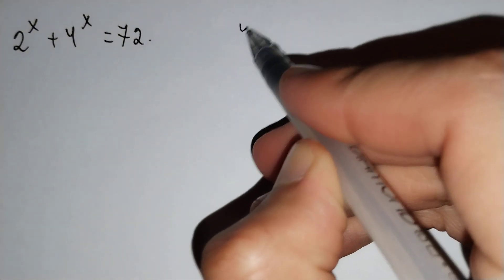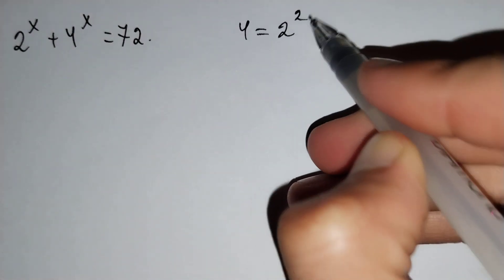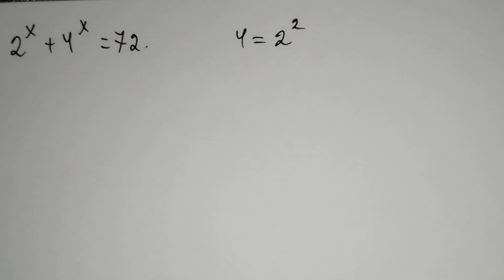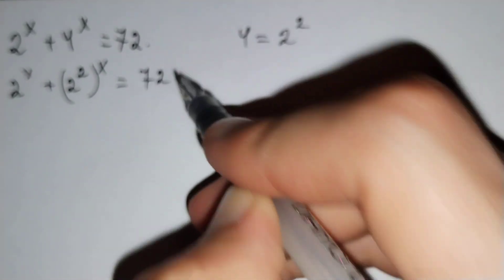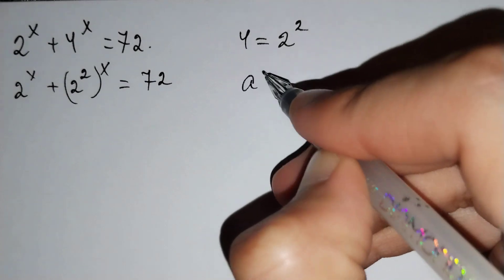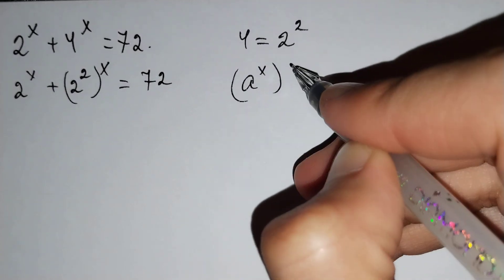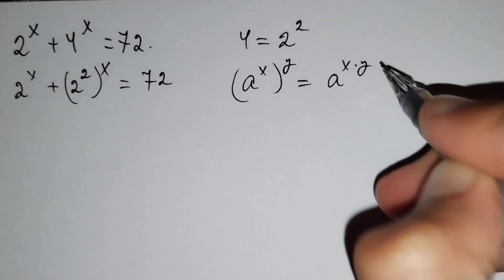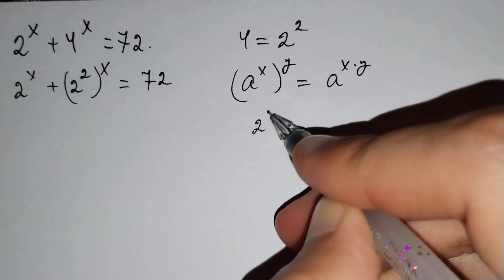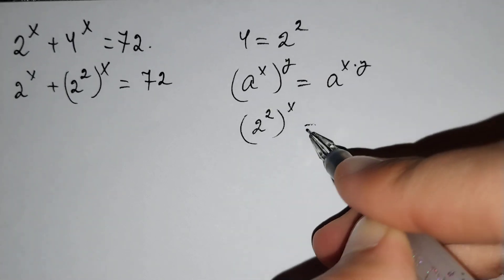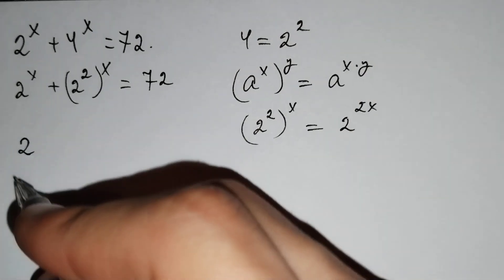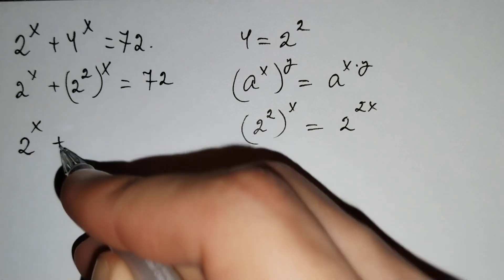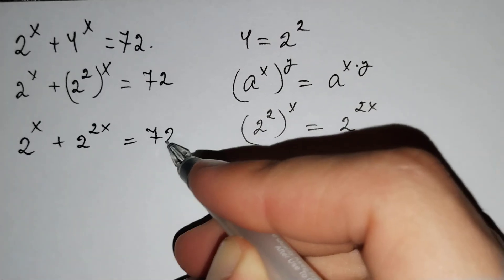Firstly, we know that 4 equals 2^2. So we rewrite the equation as 2^x + (2^2)^x = 72. Using the rule (a^x)^y = a^(xy), we get (2^2)^x = 2^(2x). So the equation becomes 2^x + 2^(2x) = 72.